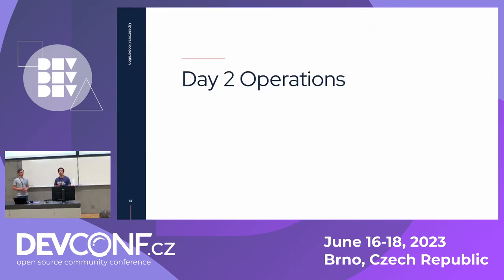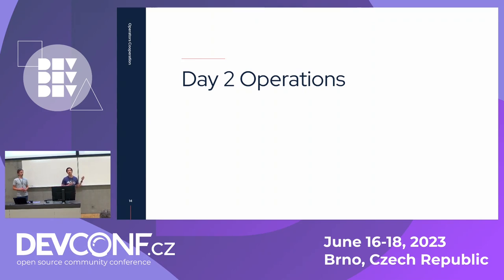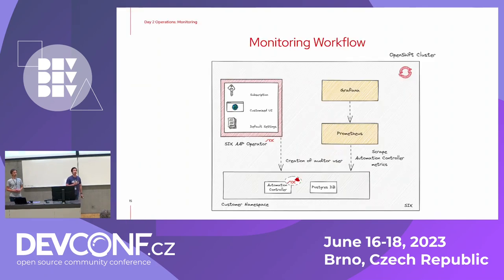Let's talk more about day two operations. It's good to have it provisioned, but then you want to tune it accordingly — do upgrades, backup and restore, and monitor resources. For the upgrade, it's very simple: whenever you upgrade the Red Hat Ansible Automation Platform operator, for example to AAP 2.4, this operator is responsible for upgrading all the automation controllers you have in your cluster. Regarding monitoring, it gives you insights. In OpenShift, without application monitoring you only get pod information — you won't know how many jobs are running.